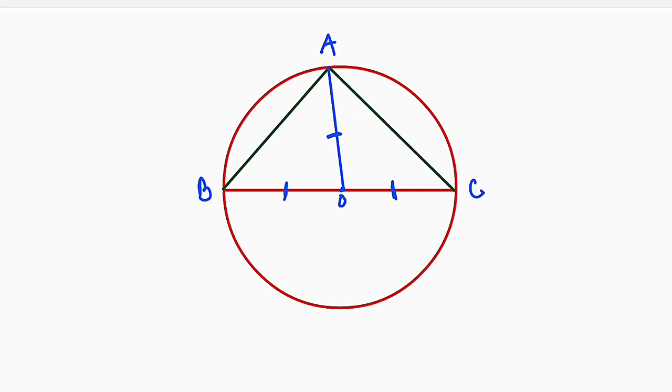And the base angles of isosceles triangles are always the same. So if we should call this one A, this must be A as well. And if this is B, this must be B. So this is exactly the angle we are talking about. This must be 90 degrees. You want to show that A plus B is equal to 90 degrees.